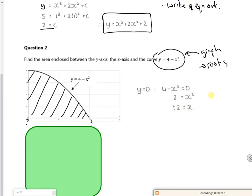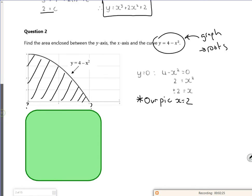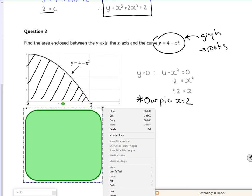So this is what this bit here has done. So y is zero. It gives us plus or minus two. But for our pink, x is two. And then we're going to integrate it between naught and two. So you're going to integrate the function between naught and two.